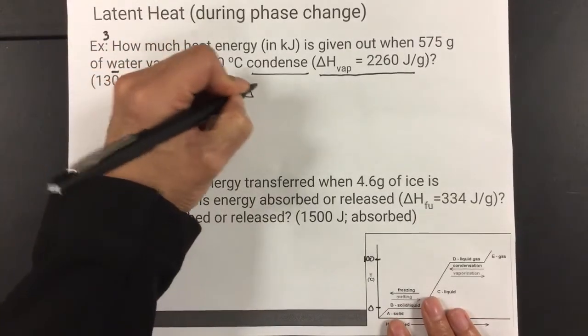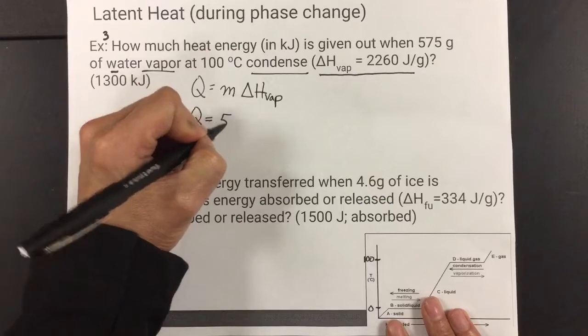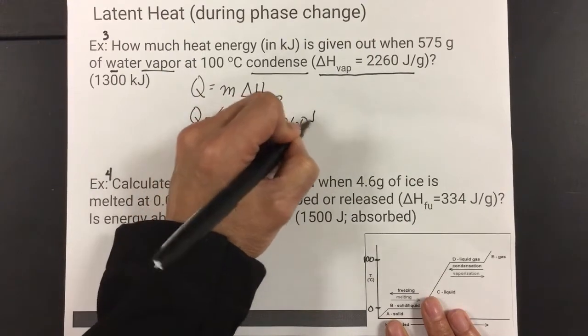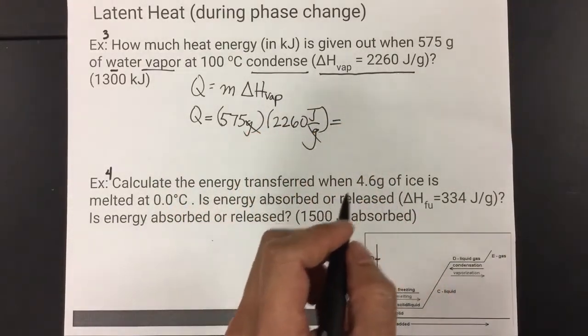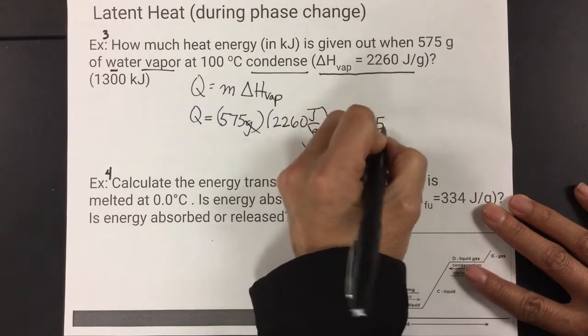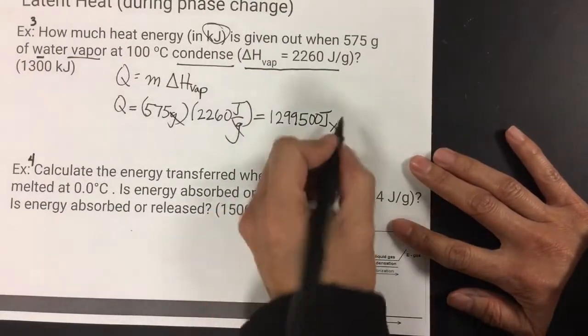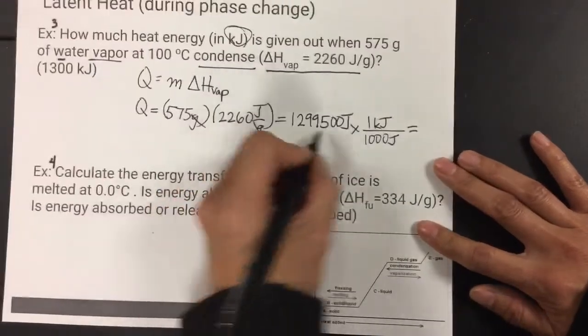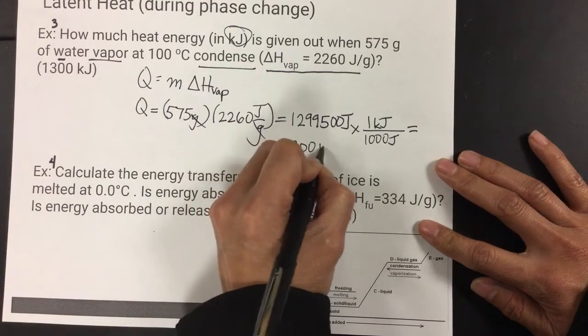So, Q equals M times ΔH vape. Plug it all in. Q, mass is 575 grams. ΔH vape is 2,260 joules per gram. Multiply it out. You get your joules in the end, which is a pretty large number. I got 1,299,500 joules. But, I want it in kilojoules. So, I'm going to then convert it to kilojoules. To convert it to kilojoules, there's 1,000 joules in 1 kilojoule. And, so, this will equal, that's three movements over to the left. And, with sig figs involved, that would be 1,300 kilojoules.